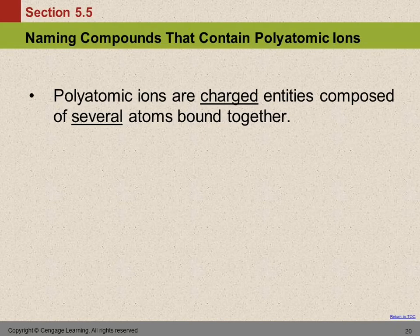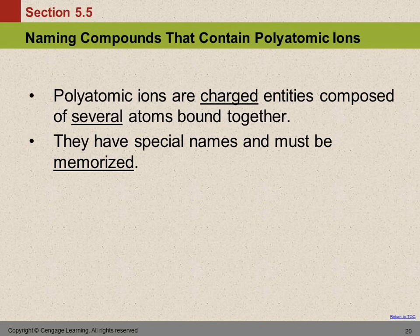These are things that are charged. Some of them might look like a compound — ClO3, for example. That would be a compound if it has no charge; if it has a charge, it's an ion. They have several atoms bound together. These guys have special names, and you just have to memorize them. There's no real pattern or system from the periodic table.